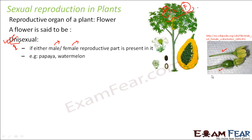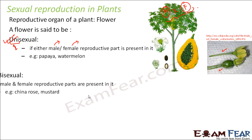A male flower and a female flower look quite different from each other. Take the example of human beings — men contain the male reproductive part and women contain the female reproductive part. These two reproductive parts are very different from each other, both in structure as well as in function. The same is true for plants as well.